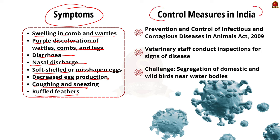In India, the Central Government requires veterinary staff to conduct periodic inspections under the Prevention and Control of Infectious and Contagious Diseases in Animals Act 2009, looking for any signs of disease among birds and other animals. However, aquatic wild birds are often found near domestic birds around lakes, dams, and reservoirs, making segregation difficult to achieve.